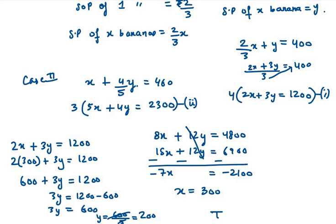But we're asked for the total number of bananas. So the total number will be 300 plus 200, which equals 500 in total. That's your answer for question number 13. The total number of bananas is 500.